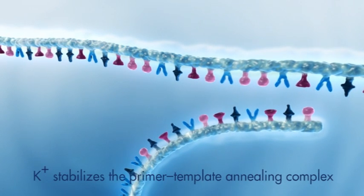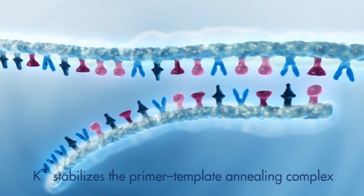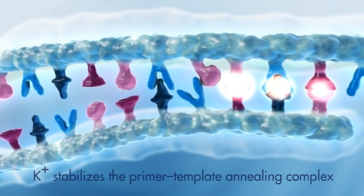The K-plus ion weakens the electro-repulsive forces between the DNA template and primer molecule. The push-off effect is overcome and the primer template annealing complexes are stabilized.